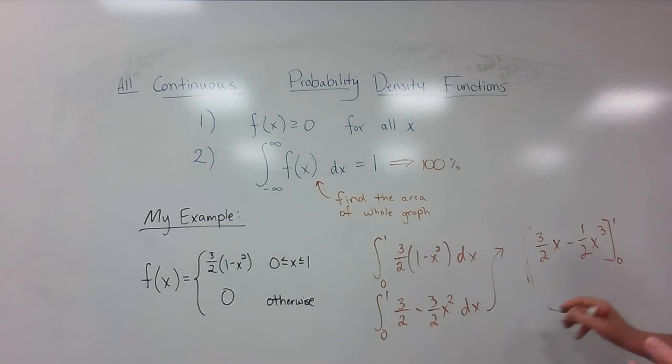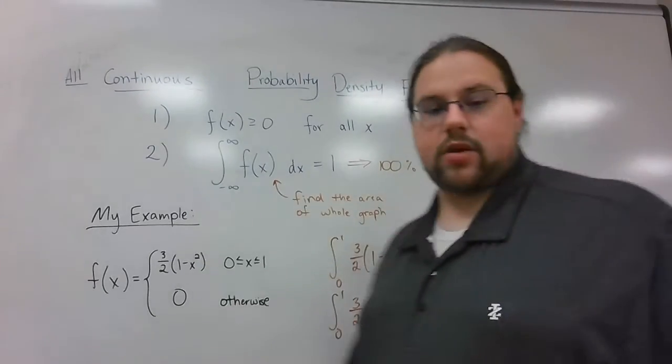So what I'm going to do, plug those in. So 3 over 2 times 1 minus 1 half of 1 cubed. And then I'm going to subtract 3 over 2 times 0 minus 1 over 2 times 0 cubed. So now that I've got that stuff written out, I'm just going to go ahead and do the math.